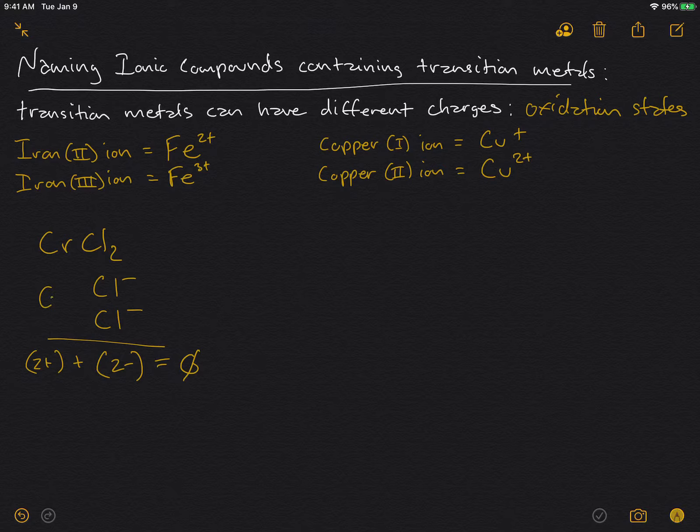So this must be chromium 2+. So if we write the name of this, we have to indicate that chromium is 2+, and we use the Roman numeral for that. So this compound would be called chromium(II) chloride.